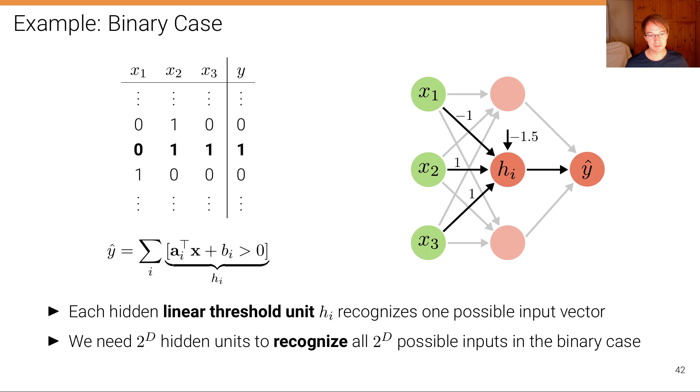And the answer is yes, and the intuition on how we're going to do this is that each of these hidden units will recognize one possible input vector, so one possible combination of x1, x2, and x3. So for instance, we have one neuron that's specifically tuned to recognize 0,1,1, which means that we will need an exponential number of hidden units to recognize all possible inputs in this binary case, which is of course not a problem for three input variables, but you can already see that this becomes problematic if the input dimension grows beyond this simple case.